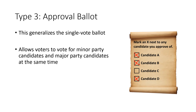Here's a new kind of ballot. A generalization of the single vote ballot is where you can put a mark next to any candidate that you approve of. In this case, this voter likes A, B, and D. We don't know if this voter likes those candidates equally, but the voter has made the decision that those are the three candidates they approve of and that candidate C is one they disapprove of. This allows voters to vote for minor party candidates and major party candidates at the same time.